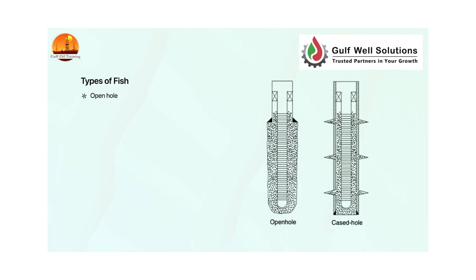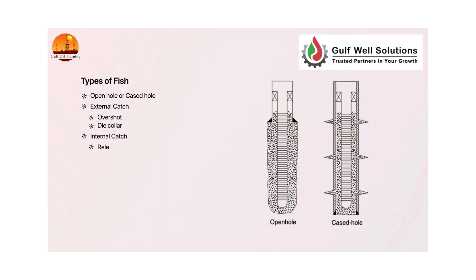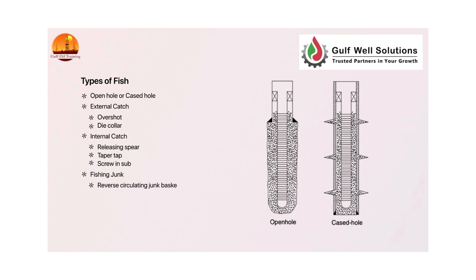Types of fish — open hole or cased hole. External catch: overshot, die collar. Internal catch: releasing spear, taper tap, screw-in sub. Fishing junk: reverse circulating junk basket, junk sub, junk mills or pilot mills.